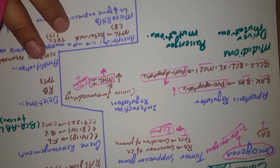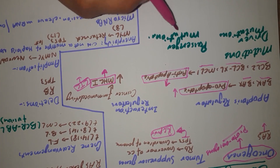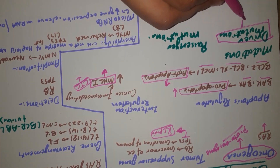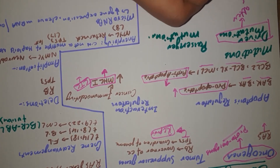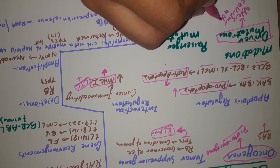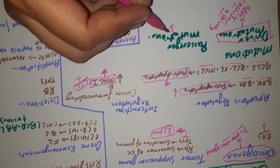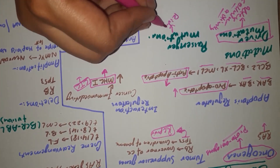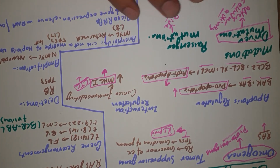Two principal classifications of mutations are driver mutations and passenger mutations. Driver mutations are the principal mutations that directly alter cellular activity. Passenger mutations are mutations which do not directly alter cellular activity but come along for a ride with driver mutations — they are additional mutations alongside driver mutations.